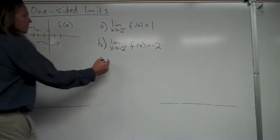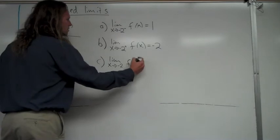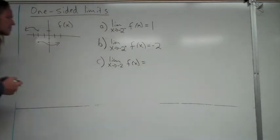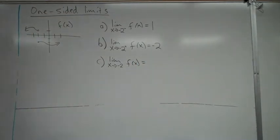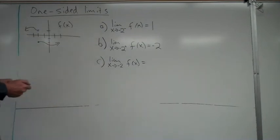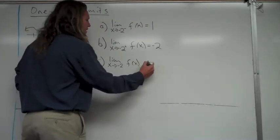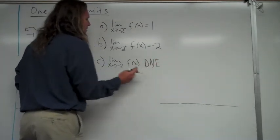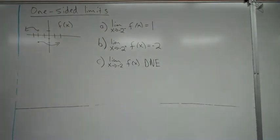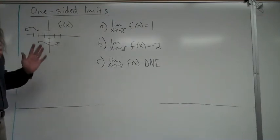If I had asked you to find the limit as x approaches negative 2 of f of x — which means from both the left and right — we can clearly tell the left and right-hand limits don't agree with one another. So we know that limit does not exist. There's a definition: in order for a limit to exist, the left and right-hand limits both have to agree.